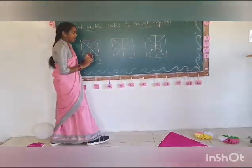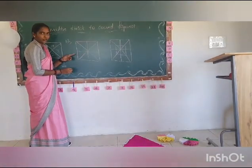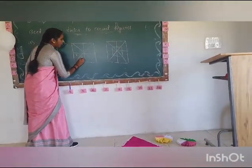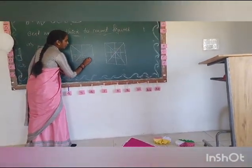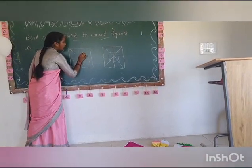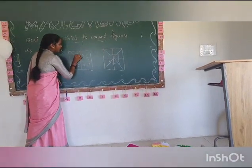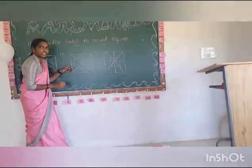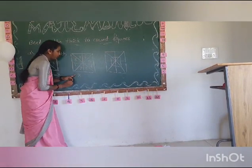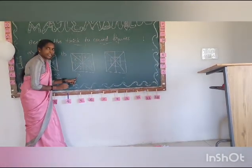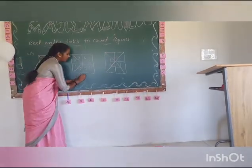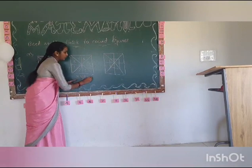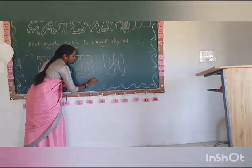Similarly, in the second figure, give the counting numbers 1, 2, 3, 4, 5, 6, 7, 8. Highest number is 8. Multiply that highest number with 2. You will get 8 twos are 16.